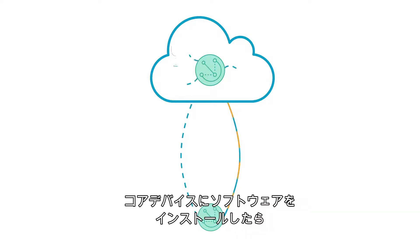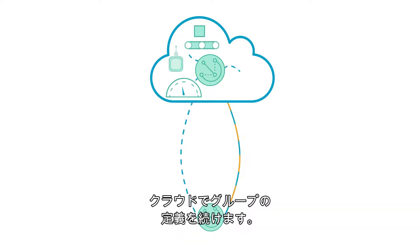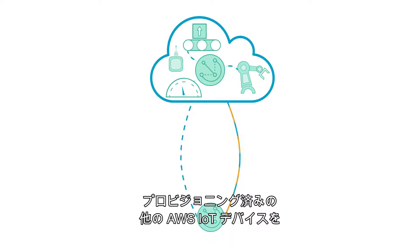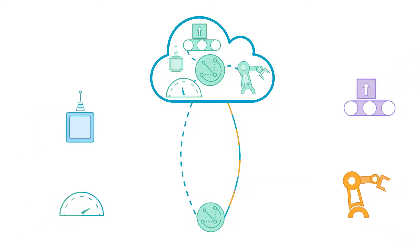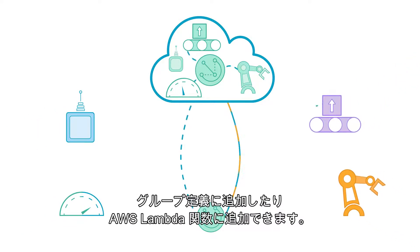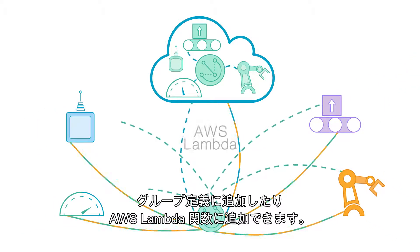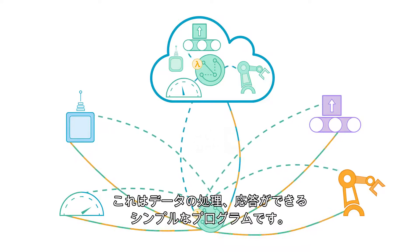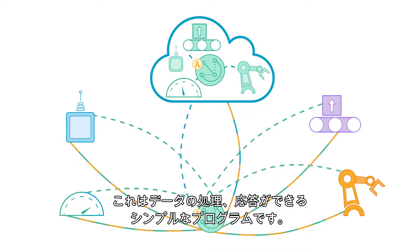Once you've installed this software on your core device, you continue to define your group in the cloud. You can add other provisioned AWS IoT devices to your group definition, or AWS Lambda functions — simple programs that can process or respond to data.